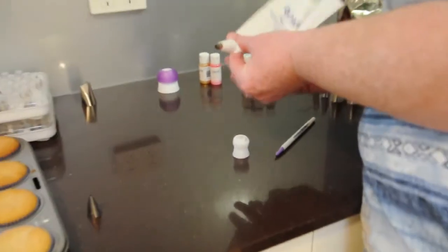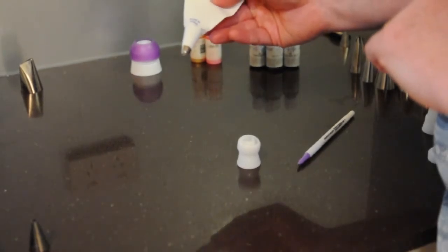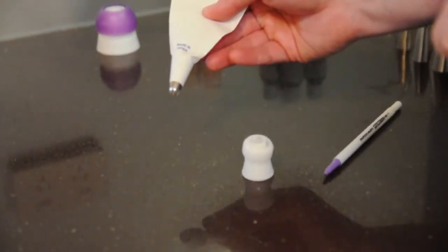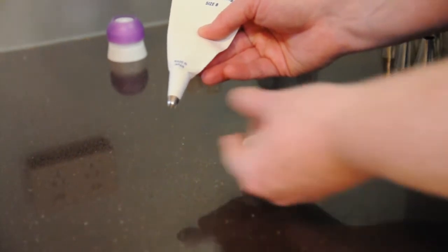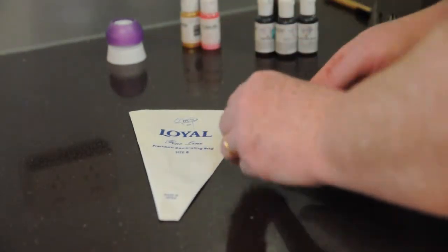The biggest issue with this is you have to take your icing out if you want to change your tip or if you have a clog in your tip. This is why we use couplers. Couplers enable us to change our tip at any time without removing the icing from the bag.